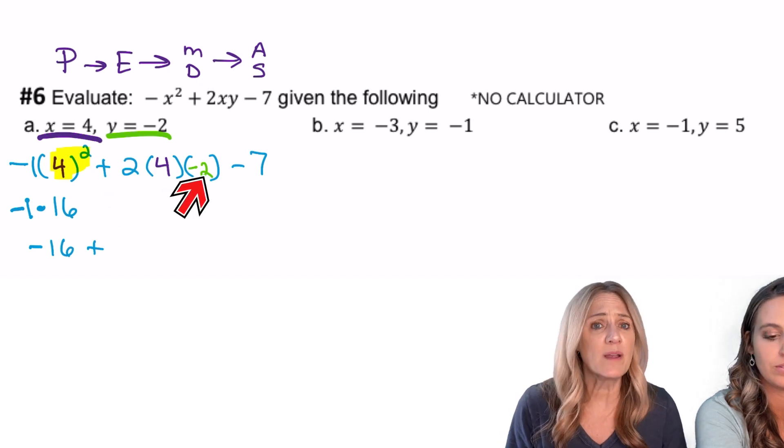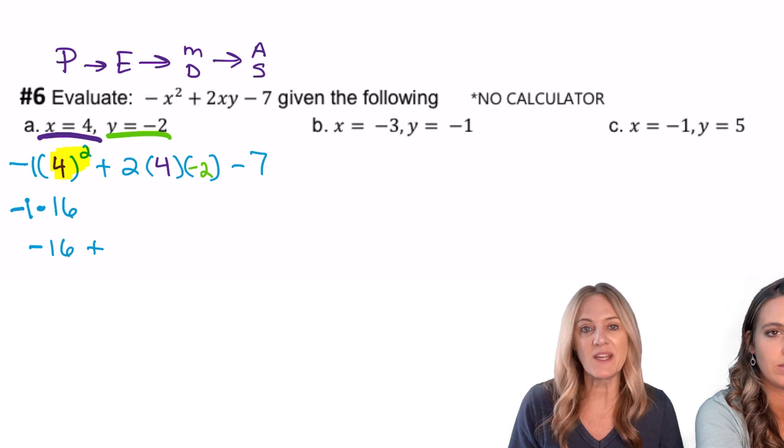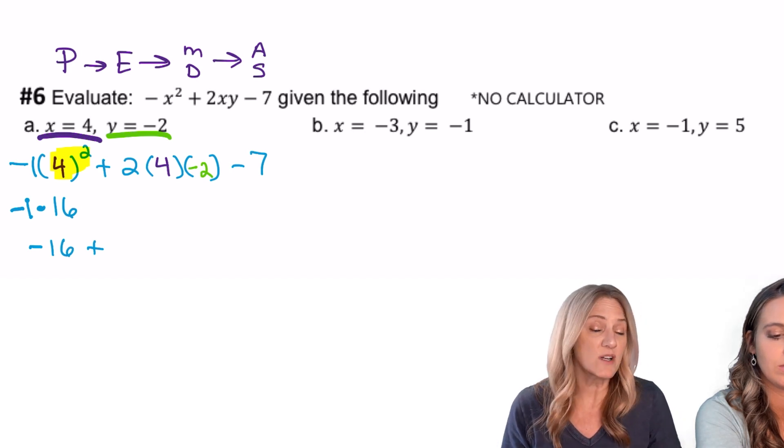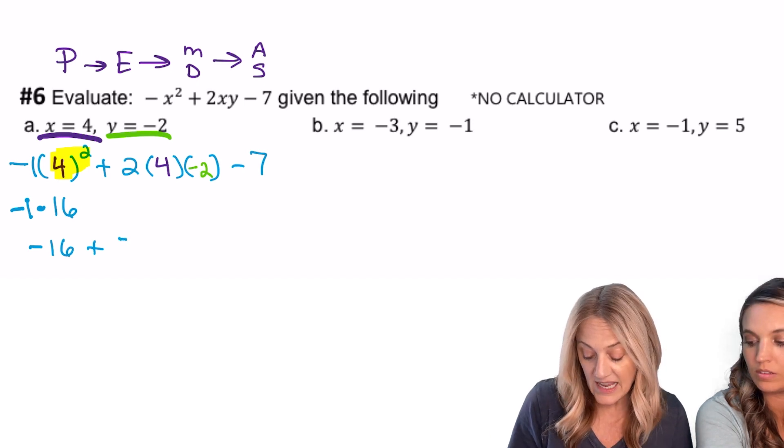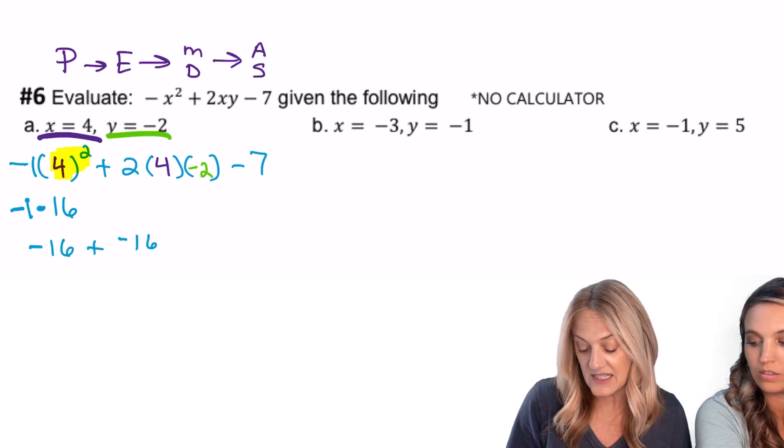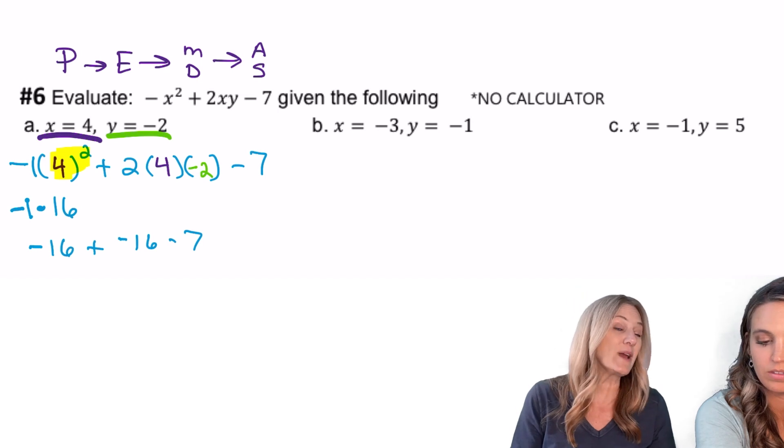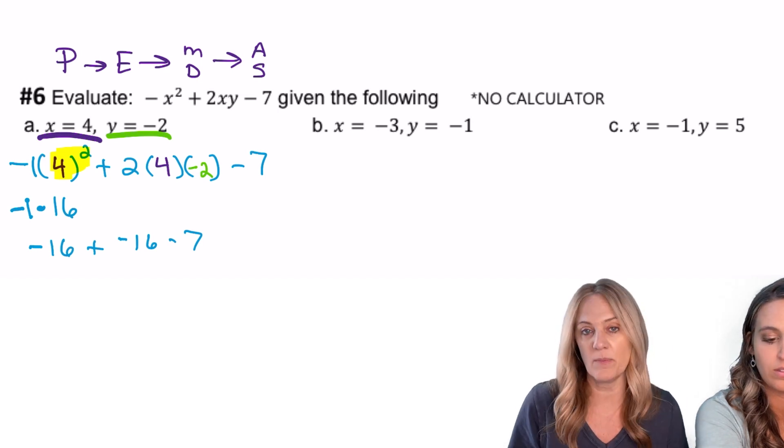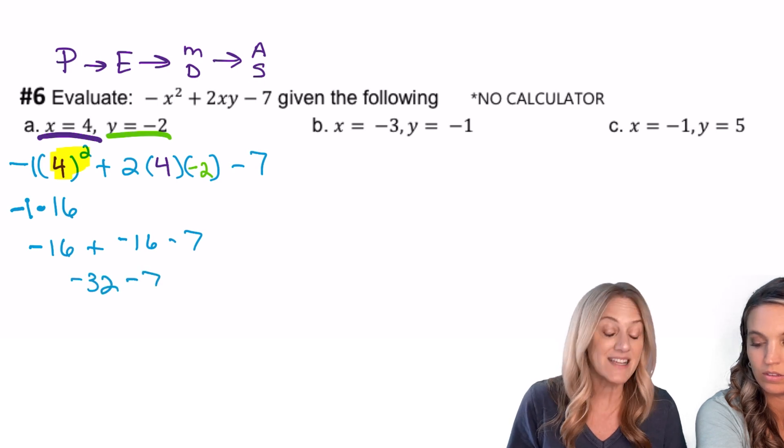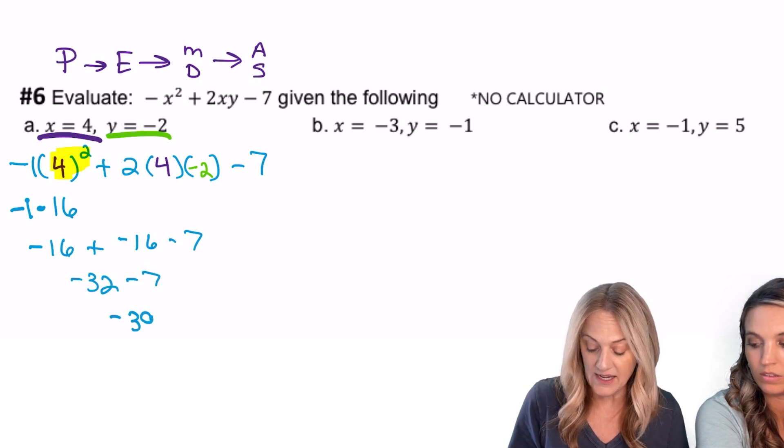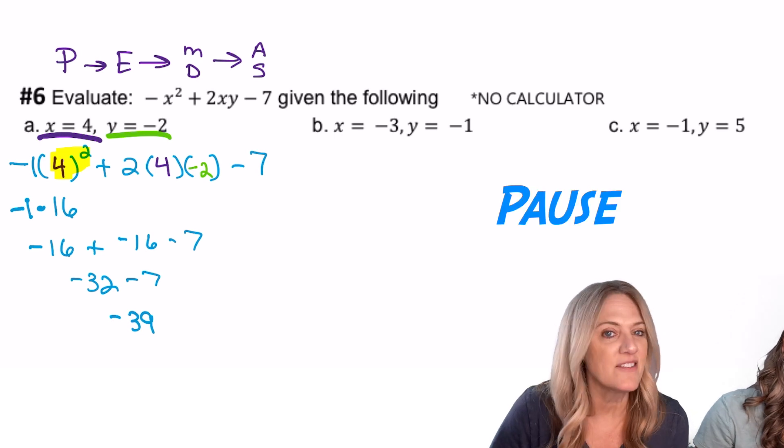So continuing with multiplication: 2 times 4 times −2. And remember, we can multiply in any order—commutative property of multiplication—so 2 times 2 is 4, times another 4 is 16. We have a negative, so we're going to have −16 + (−16) − 7. And now we're ready to add and subtract in order from left to right. −16 + (−16) is −32 − 7, we get a −39.